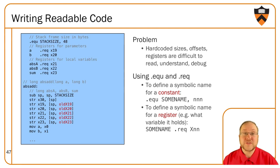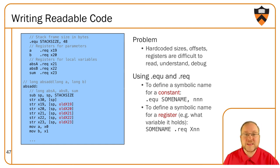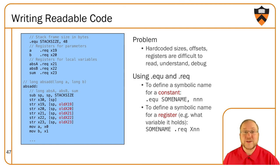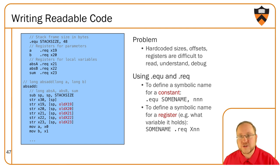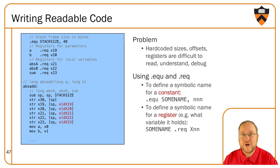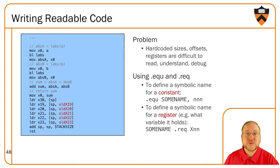We can go one step further and use variable names for offsets to the stack. For stack-resident parameters and local variables, 'SP, my_var_name' is a lot more meaningful than 'SP, some integer.' When we come to the core of our operation — 'sum = abs_a + abs_b' — it becomes so readable that without the standard C comments, we probably wouldn't even have needed to comment it at all. That's a really big win in terms of code readability.